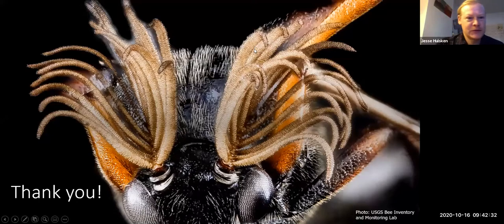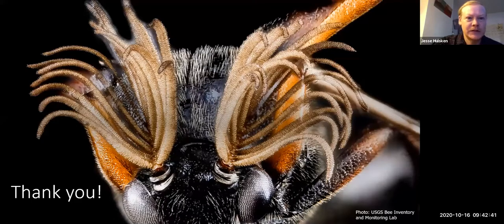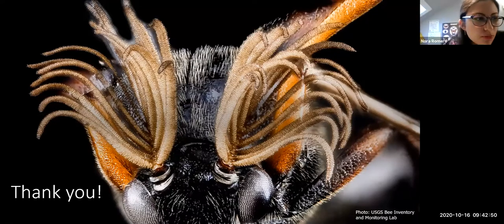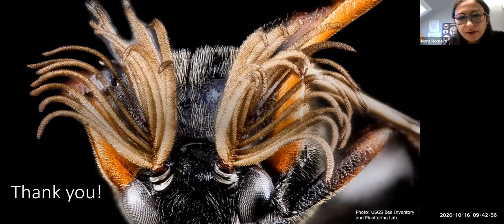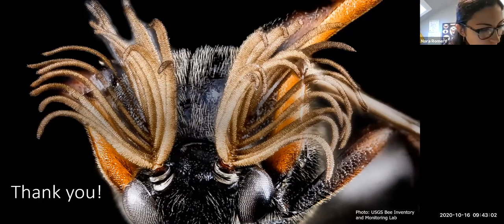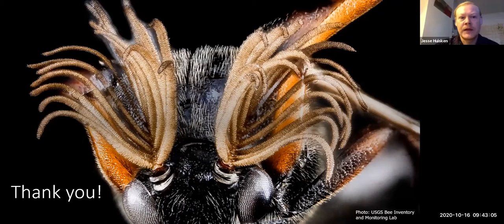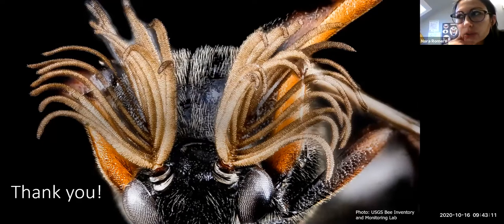Thank you, Nora — that was wonderful. So we have a few questions. Susan Chan asked: if Ripiphorus fasciatus devours the larvae, how do they get out of the soil where the bees nest, and when do they emerge? They will be emerging around August, which is when the adult was found. They crawl out from the ground.